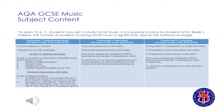GCSE Music is made up of three components: Understanding Music, Performing and Composing. For Component 1, Understanding Music, pupils will sit one exam paper, which lasts for an hour and a half and makes up 40% of the GCSE.